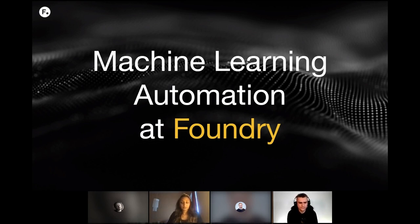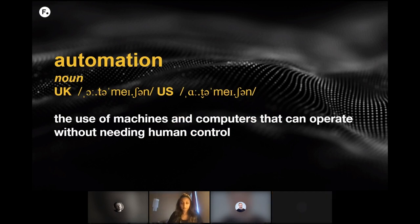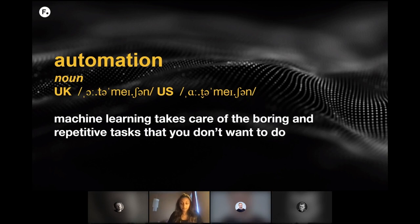Hi there. I'm Ben Kent, Research Engineering Manager at Foundry and the lead on the AI research team. I'm going to tell you about what we're doing by way of machine learning automation at Foundry. The first thing to address is what do we mean by automation? According to one dictionary definition, automation means the use of machines and computers that can operate without needing human control. In Foundry's AI research team, we really don't want to replace artists with machines. When I talk about automation, I mean using machine learning to remove and speed up the boring, mundane, and repetitive tasks you don't really want to do, so you can concentrate on the fun, creative things that made you want to be an artist in the first place.